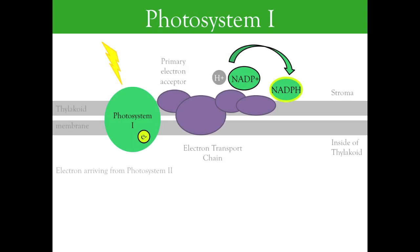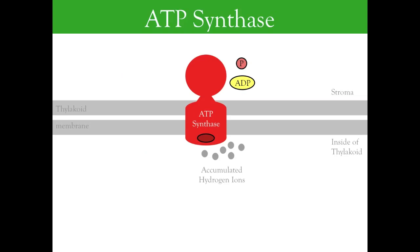Joining NADPH in the next phase is ATP. This ATP is created from ADP and inorganic phosphate by an enzyme called ATP synthase, in a process powered by the flow of hydrogen ions across the thylakoid membrane.